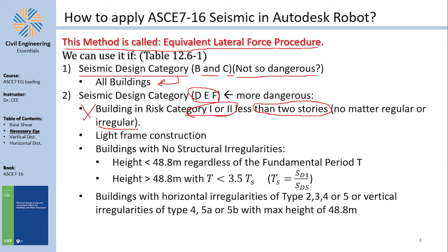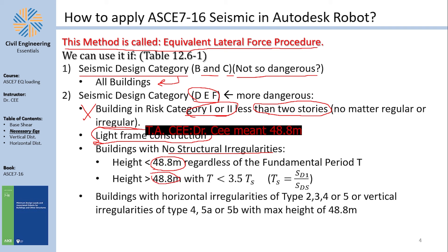Light frame construction is also an applicable limitation for DEF categories, because light frame means small weight and therefore small lateral loads. Additionally, buildings with no structural irregularity at a height less than 48.8 meters face fewer restrictions than taller structures. This 48.8-meter threshold appears frequently in the code.